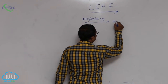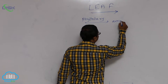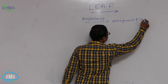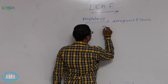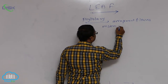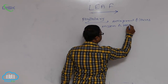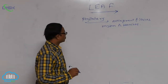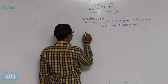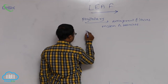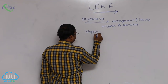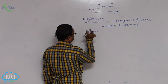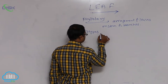Phyllotaxy means arrangement of leaves — specifically, the arrangement of leaves on stem or branches. Phyllotaxy is mainly divided into three types based on the number of leaves present at every node.